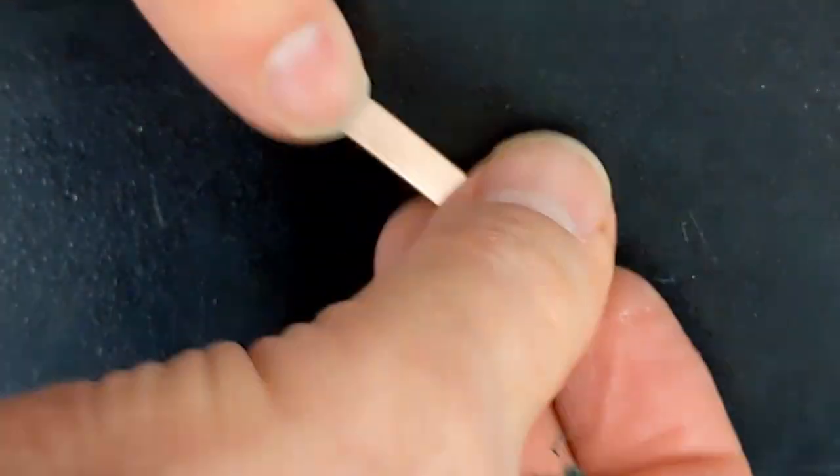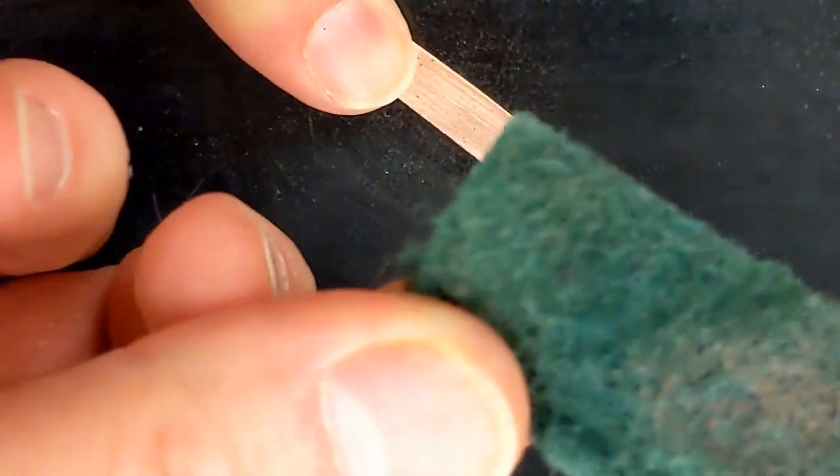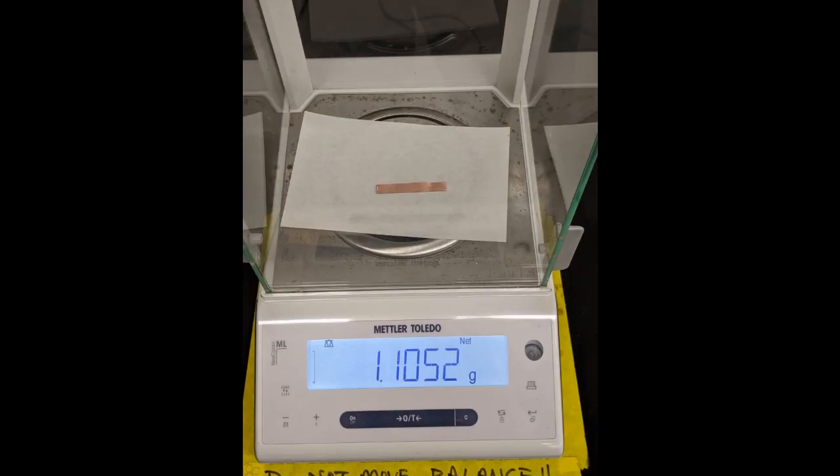First you need a metal piece and get it all nice and clean. It's scrubbed on both sides. And then you're gonna wipe it off and clean it with a chem wipe. You might need a little water or isopropyl alcohol to get it nice, clean and dry. Weigh it.